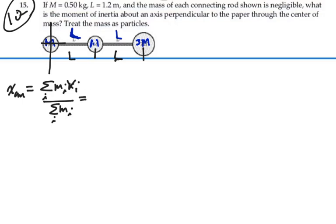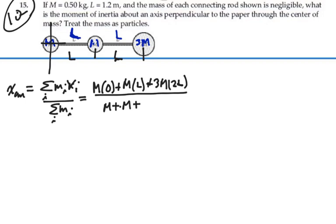So we're going to weight every mass by its position divided by the total mass of the system. We have an m located at x equal to zero plus another m located at x equal to l plus a 3m located at x equal to 2l. All this over the total mass of the system which would be m plus m plus 3m.